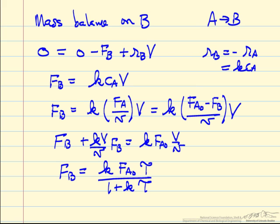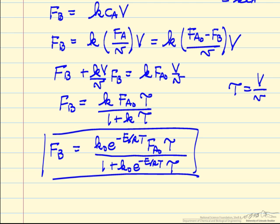So I've just done some algebra. I took one term F_B, brought the other side of the equation, factored out F_B, and then used our definition of tau, volume of the reactor over the volumetric flow rate.